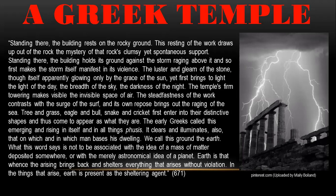We call this ground the earth. What this word says is not to be associated with the idea of a mass of matter deposited somewhere, or with the merely astronomical idea of a planet. For Heidegger, this is fusis—this experience of everything rising out. Earth is that whence the arising brings back and shelters everything that arises without violation. In the next video, we're going to get much deeper into this conception of earth and of world, and it'll be a bit clearer what he means about sheltering everything and bringing everything back into itself.